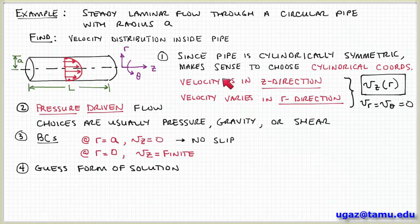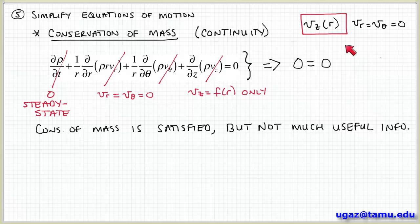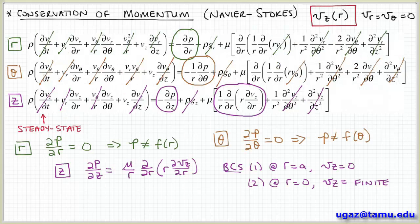I then showed you how to apply this in the context of flow through a pipe. We used cylindrical coordinates and established that it's pressure-driven flow, and we proposed some boundary conditions. Then we evaluated which velocity components are most important based on our decisions about the flow direction and the direction in which the velocity varies. We evaluated the conservation of mass and the Navier-Stokes equations and reduced the problem to a second-order differential equation.